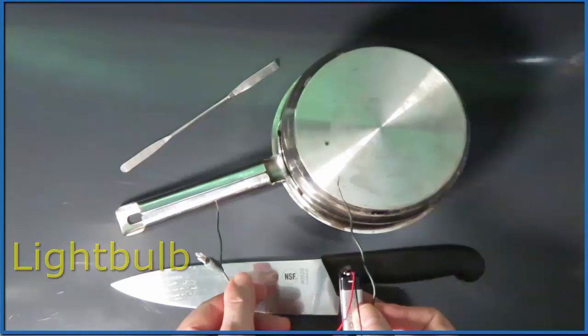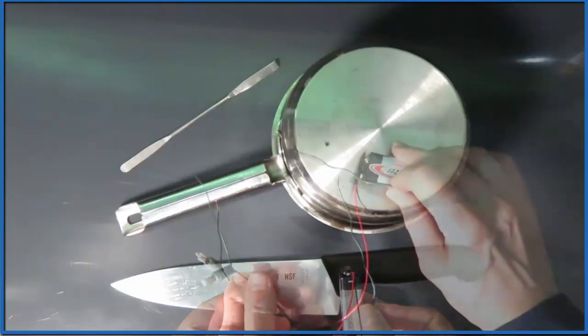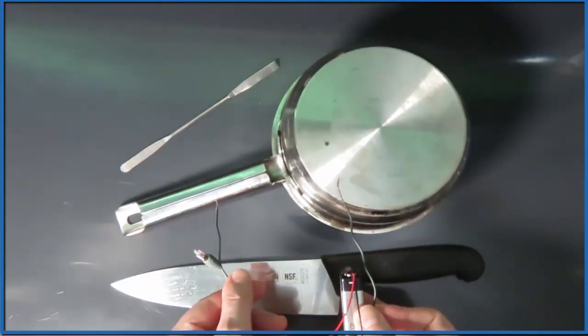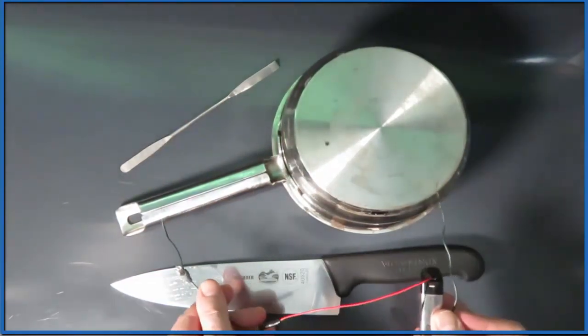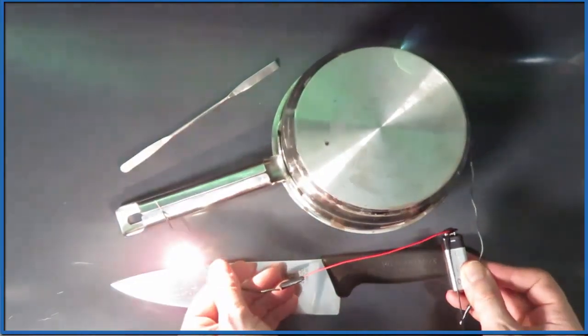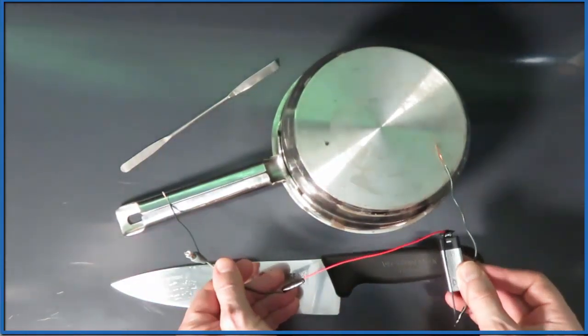We touch the wires to the bottom of the pan here, the stainless steel pan, and the light lights up. We've completed the circuit. Electricity is flowing through the pan, around through the wires and the battery, and lights the bulb up.